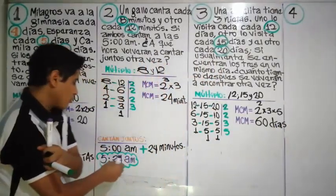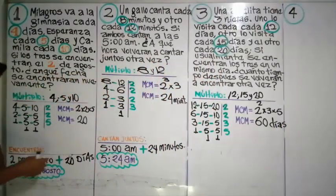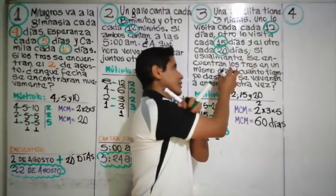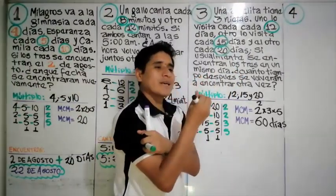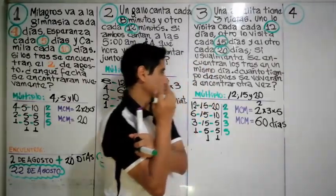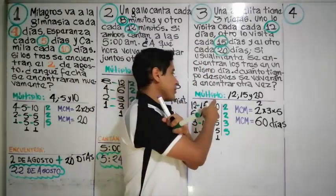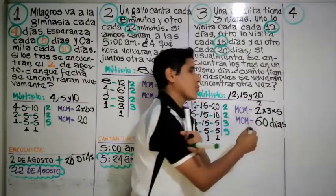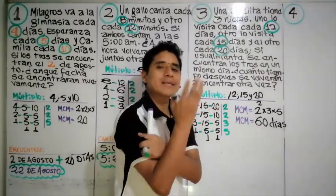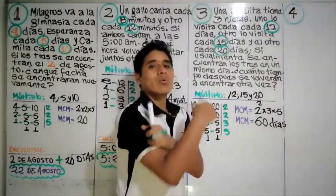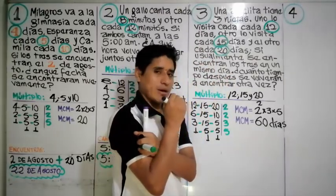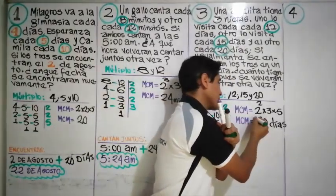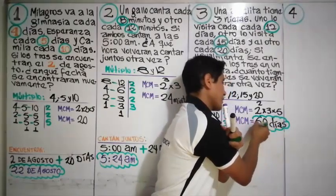¿Por qué no resumimos con la fecha como en el problema anterior? Porque en este caso no nos dan la fecha exacta del encuentro; solo se pregunta cada qué tiempo se vuelven a encontrar. La respuesta es cada sesenta días, o en otras palabras, cada dos meses.